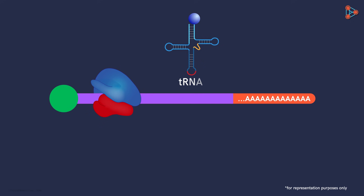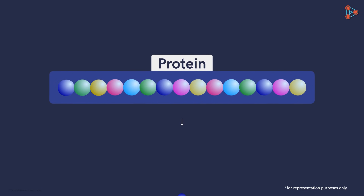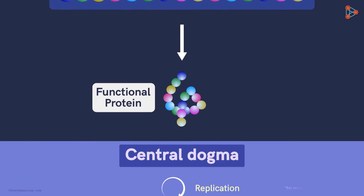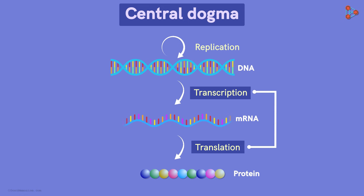Now the other type of RNA called tRNA steps in to get the remaining work done. At the end, a chain of amino acids is formed and released from the ribosomal unit — and that chain is our protein! The chain is further modified to achieve a proper configuration so that the protein becomes functional. This is how the translation process works — the code of mRNA is translated and the protein chain is synthesized. The processes of transcription and translation together are called gene expression: the code of a gene is transcribed first and then translated into the form of proteins.